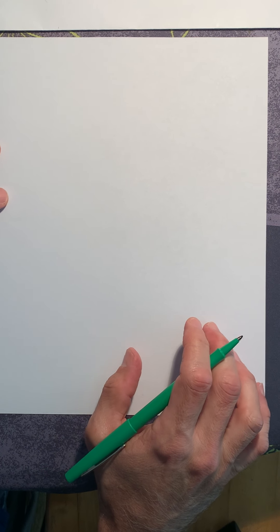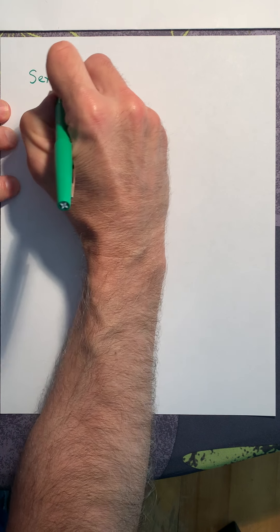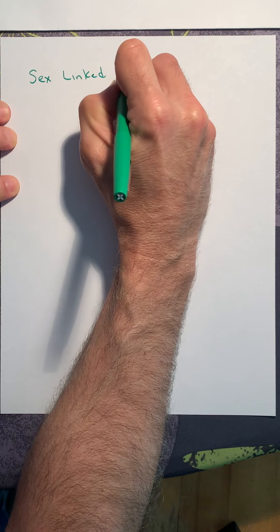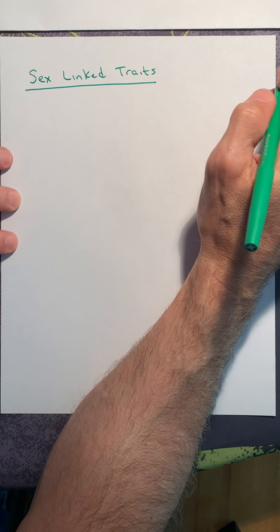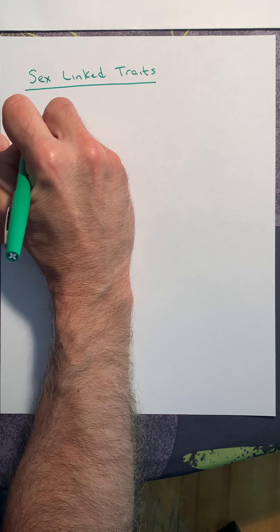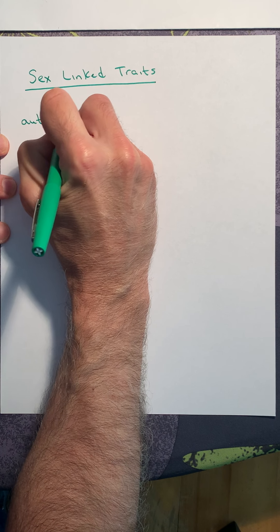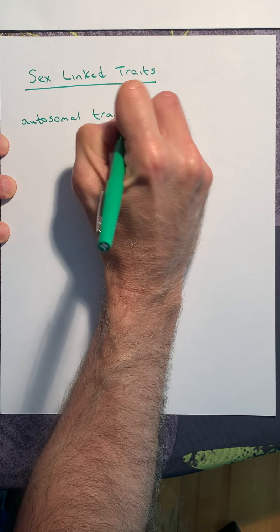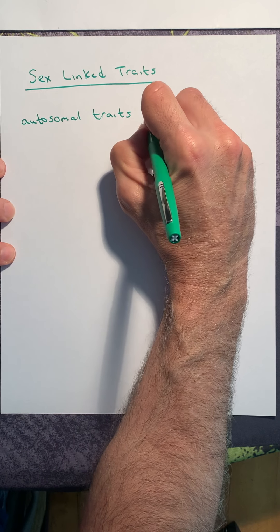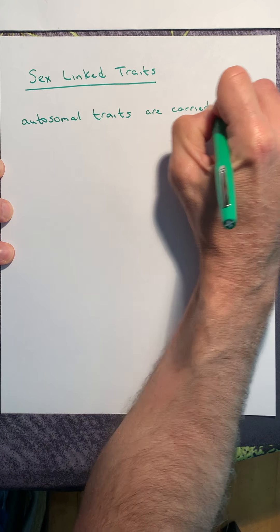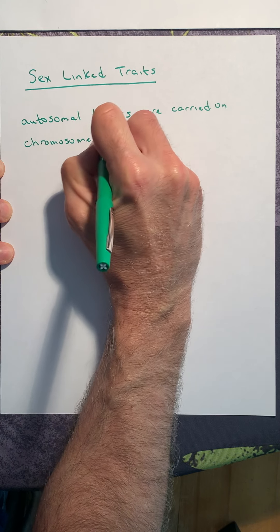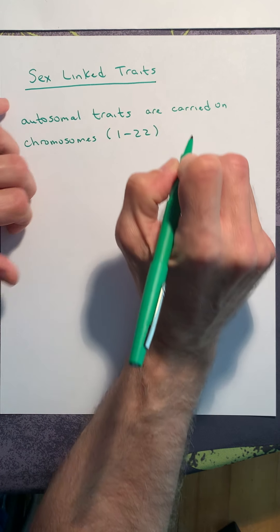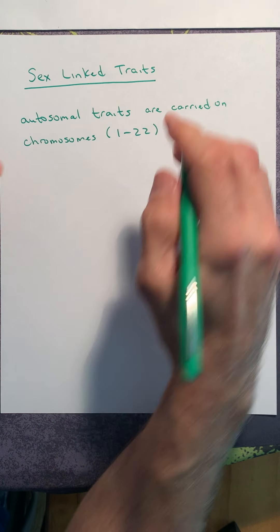Well, any allele that's carried on the 23rd chromosome we call sex linked. So what we need to start in our notes today are called sex linked traits. There are certain traits that are specifically linked to our sex chromosomes. So what we've talked about thus far are called autosomal traits. And if a trait is autosomal, that means it's carried on one of the chromosomes, one through 22.